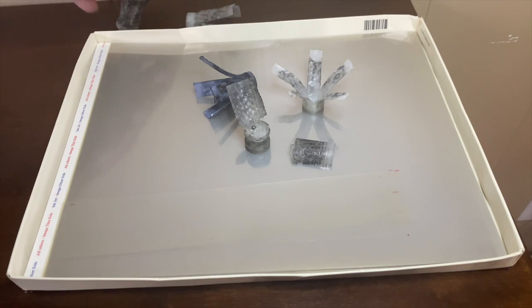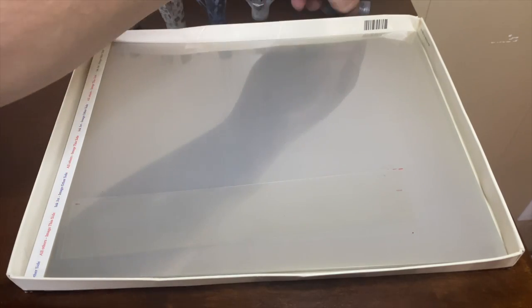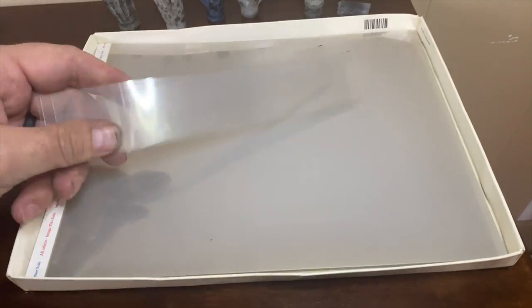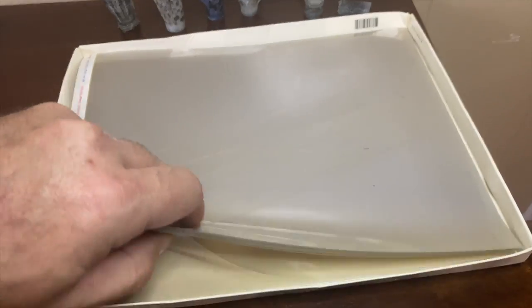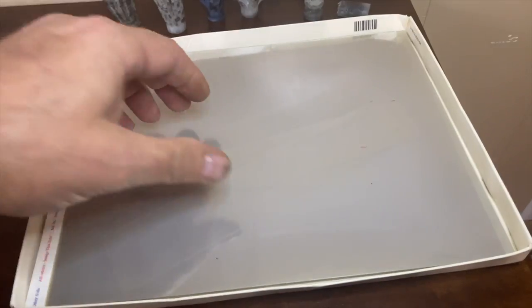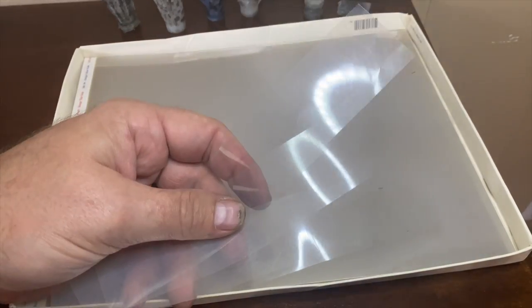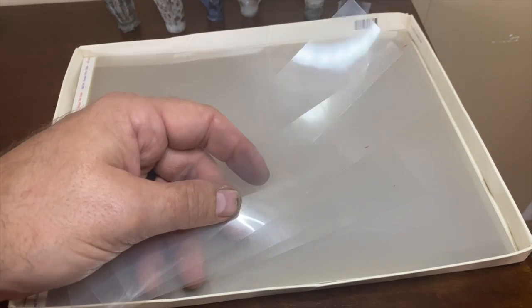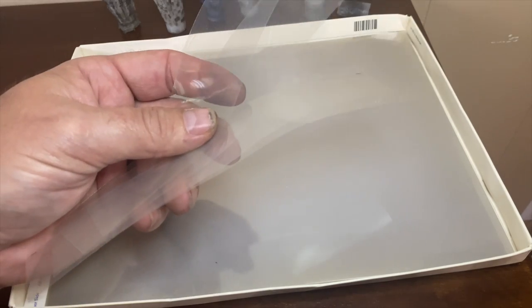So, you can either buy mylar wrap from the major outlets that sell it, like Precision and such. Or, you can find you some of these sheets at an office supply store. Schools don't even hardly use this stuff anymore because everything is online. So, you might be able to find a teacher that has some of this stuff and they'll just give it to you.